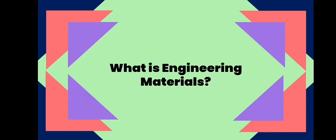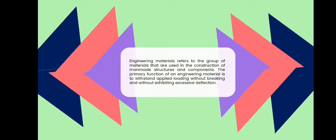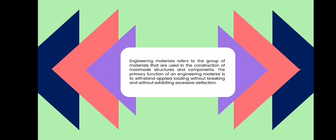What is engineering materials? Engineering materials refers to the group of materials that are used in the construction of man-made structures and components. The primary function of an engineering material is to withstand applied loading without breaking and without exhibiting excessive deflection.